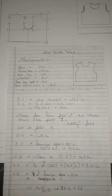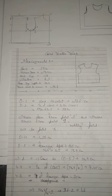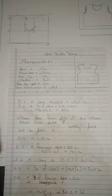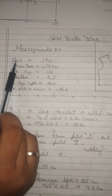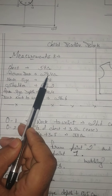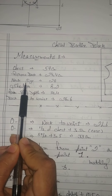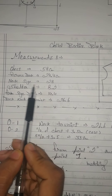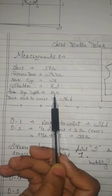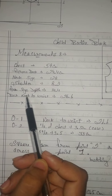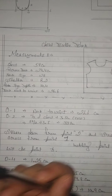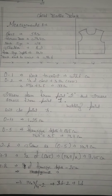Hi all of you, today we are going to learn child body's block. For the child body's block, the measurements you need are: chest round 59 cm, back width 24.4 cm, neck size 28 cm, shoulder 8.2 cm, arm sight depth 14.4 cm, and back neck to waist 26.6 cm. These are all the measurements you need to draft your child body's block.